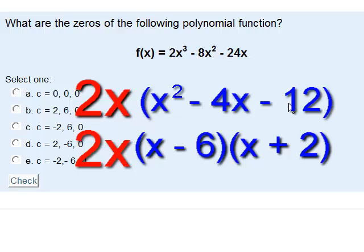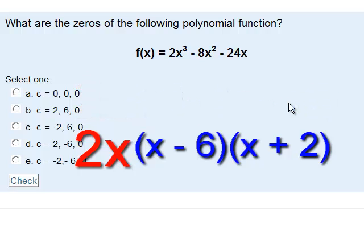So, that makes the zeros the following. If x equals 0, that would make 2 times x equal to 0, and 0 times anything would be 0. So that's the first one.